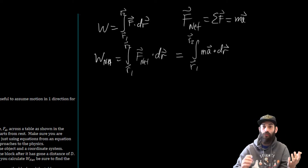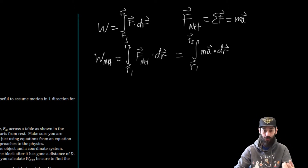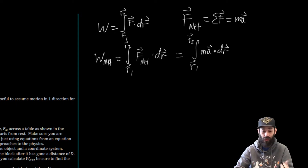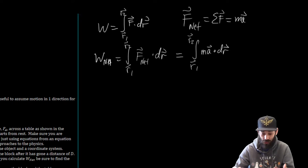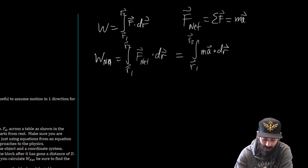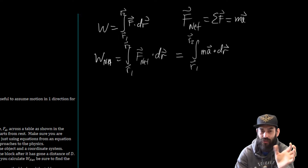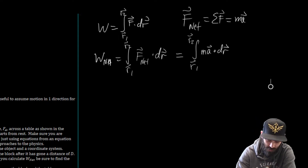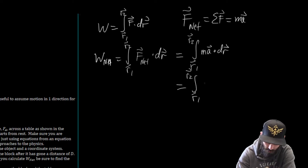We see from Newton's second law that the net force is just mass times acceleration. So this is going to be equal to the integral from R vector 1 to R vector 2 of the mass times the acceleration dotted with dr. As a simplification, I'm going to assume that all the motion occurs in one dimension because I don't want to get too much into the vector calculus. But this does work in general. So A vector dot dr vector is just going to be A, the magnitude of A, times dr.